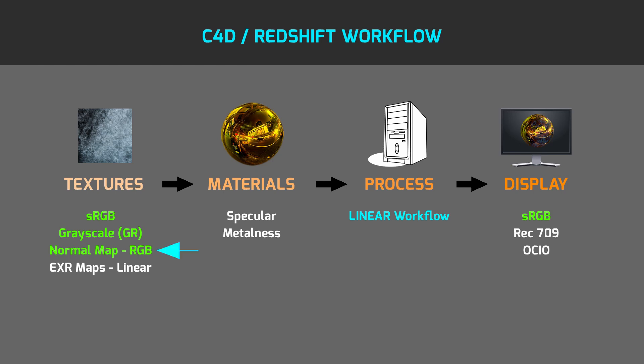Normal maps are RGB textures which use the red, green, and blue channels for X, Y, and Z transformation. Grayscale textures and normal maps need to be interpreted as linear for correct results.